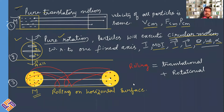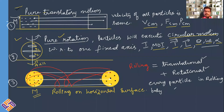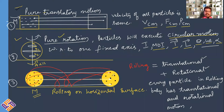When dealing with translatory motion we calculate the velocity of the center of mass, and when dealing with rotational motion we calculate angular velocity. Therefore every particle in a rolling body has both translational and rotational motion. The velocity of every particle in rolling motion is the sum of its translational velocity and its rotational velocity.